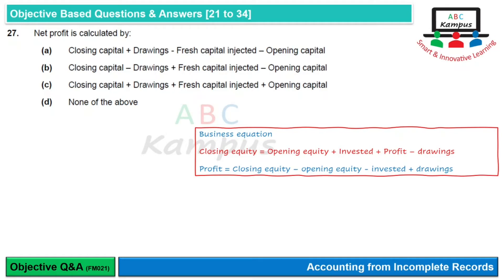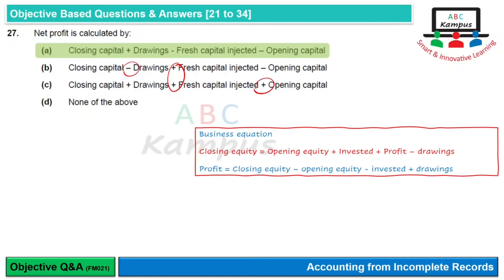Profit = closing equity − opening equity − amount invested + drawings। इससे हमारा option A correct है। Option B और C में drawings को plus में और opening capital को plus में लिखा हुआ है — ये mistakes हैं। Option A ہر angle سے correct है।